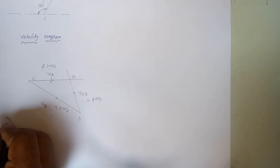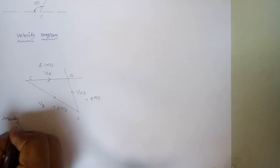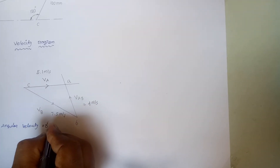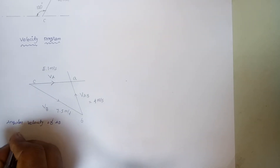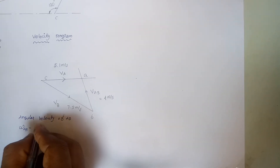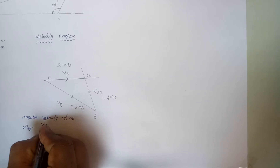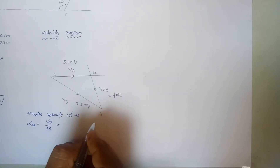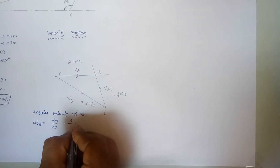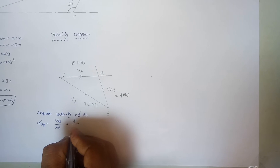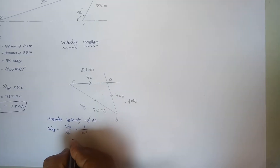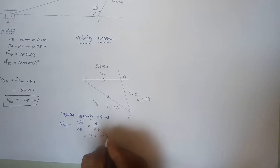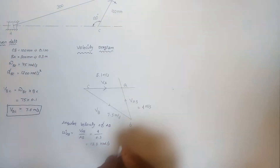The angular velocity of AB equals velocity of AB divided by AB. The velocity of AB is 4 meters per second and the length of AB is 0.3 meters. So the angular velocity of AB is 13.3 radians per second in the clockwise direction.